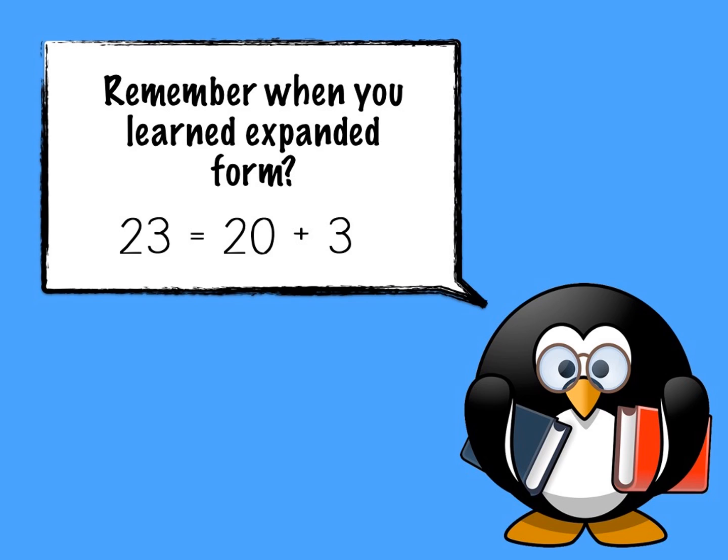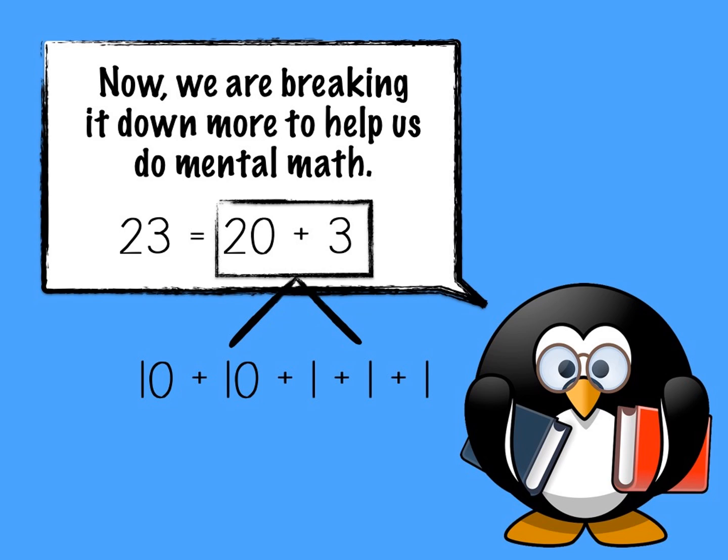What we're actually going to do with this expanded form, break it down a little bit further to help you do your mental math a little easier. So for example, we have 20 plus 3 and we're breaking it down by tens and ones. So we have two tens, one, two, two tens, and we have three ones. One, two, three. Remember this because this is going to help you when we go on to our practice example.